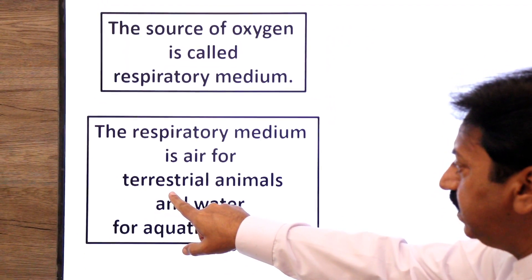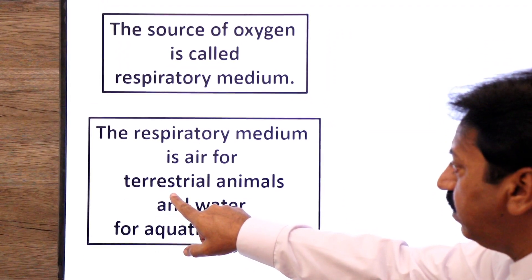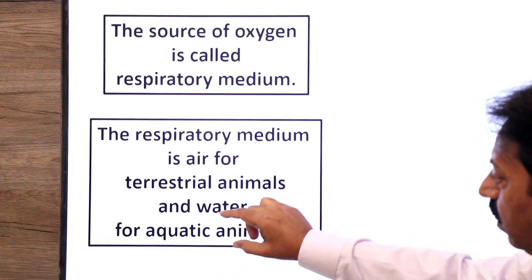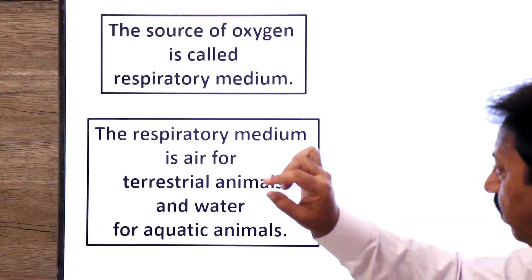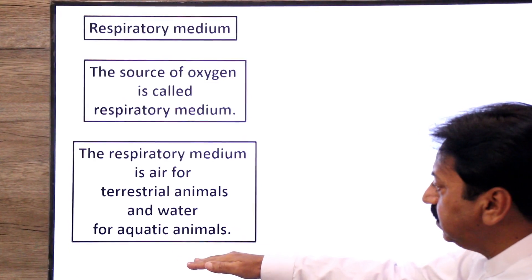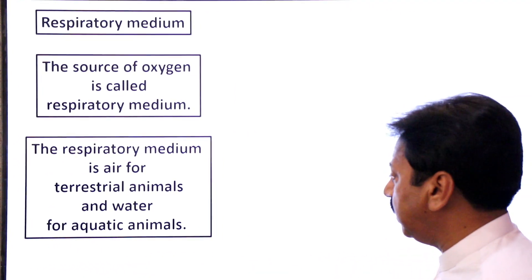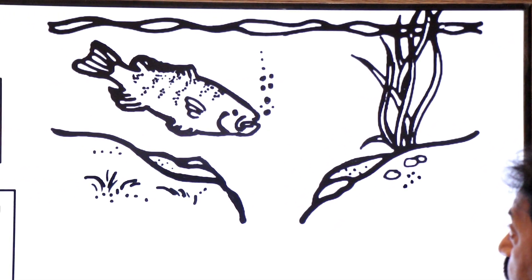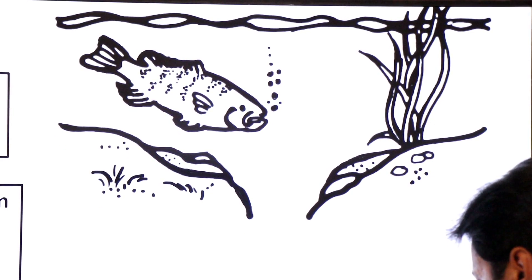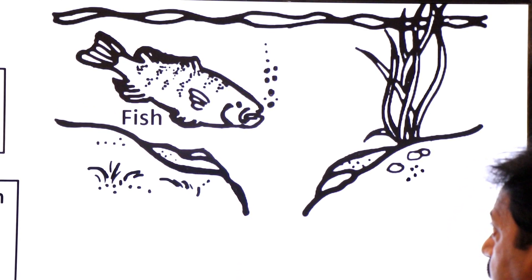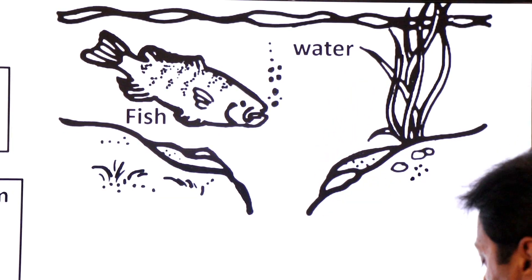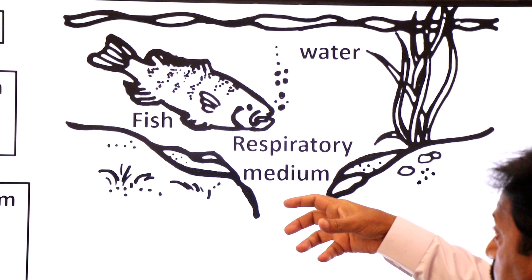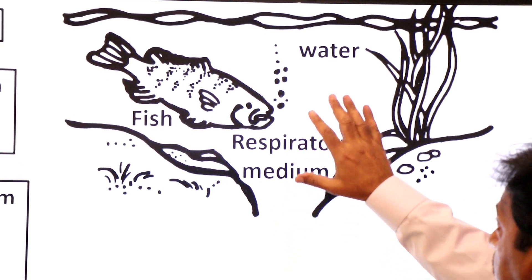Animals that live on land are called terrestrial animals, and their source of oxygen is air. Those that live in water are called aquatic animals, and their source of oxygen is water. Terrestrial animals obtain oxygen from air, and aquatic animals obtain it from water. Now let's look at this diagram - a fish living in water. For fish, the respiratory medium is water. If a fish needs oxygen, where does it come from? Water.